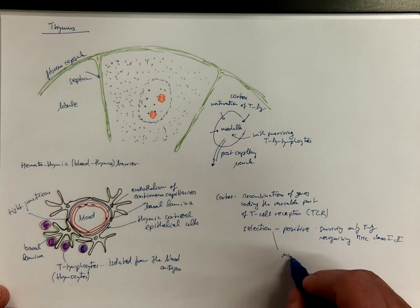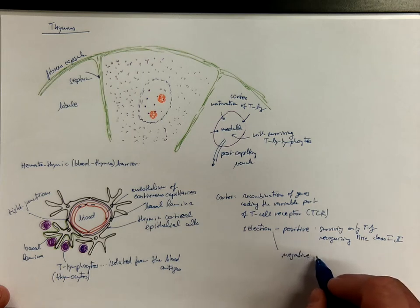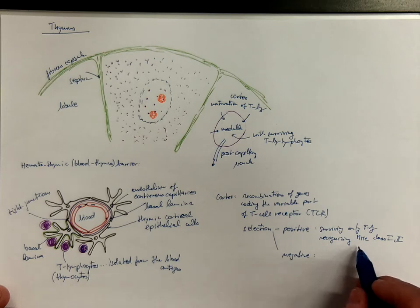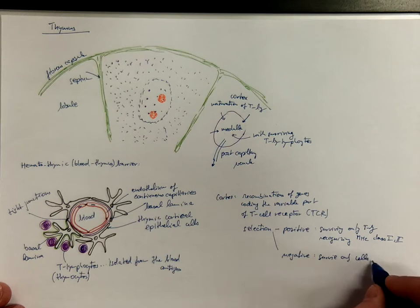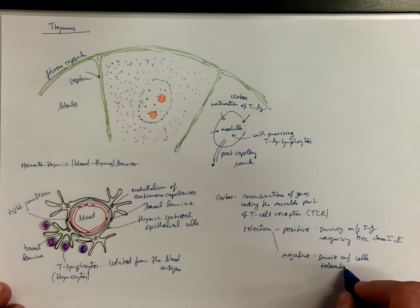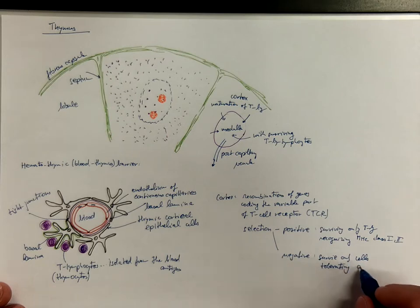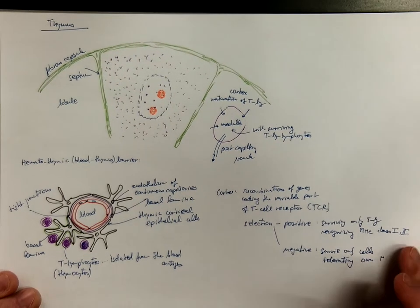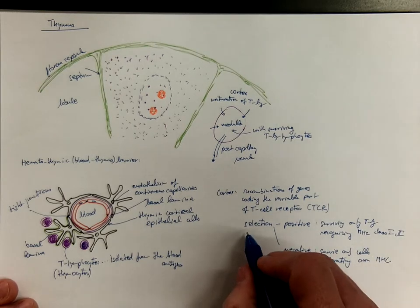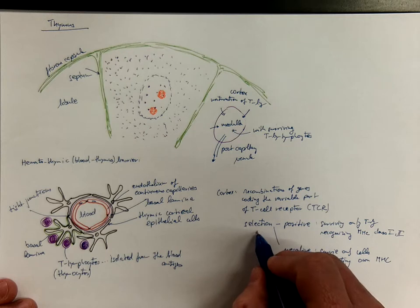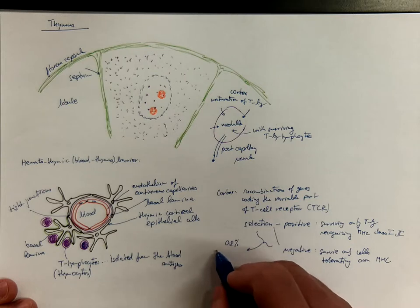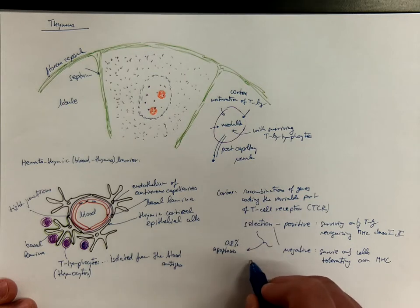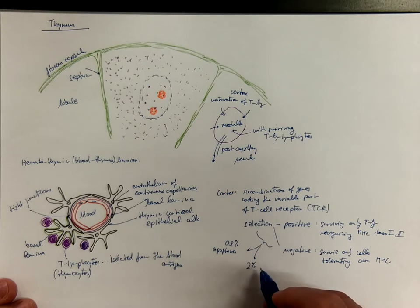The second step is negative selection. They don't have to react against these own body molecules too strongly, tolerating own MHC molecules. The selection results in 98% apoptosis.